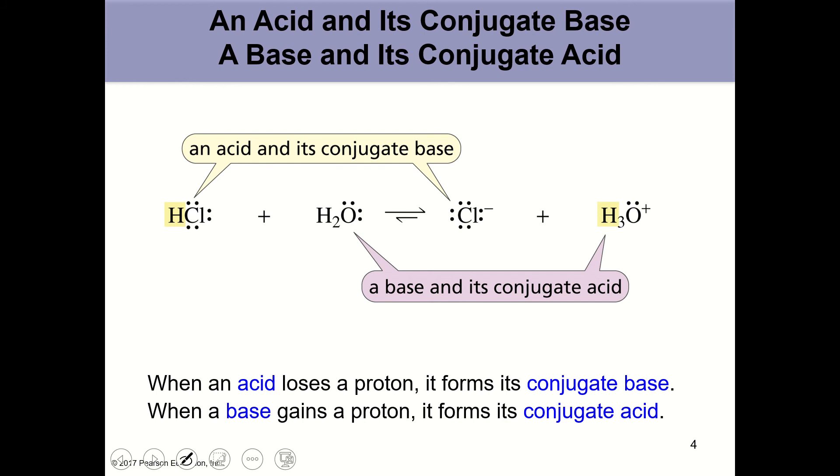We also have to remember our definitions for conjugate acids and conjugate bases. A conjugate acid has one more proton than the corresponding base. So if you have an acid-base pair, let me draw an example. Say we have methanol or methyl alcohol. What would be the conjugate base of methyl alcohol? A conjugate base has one less proton than the acid.